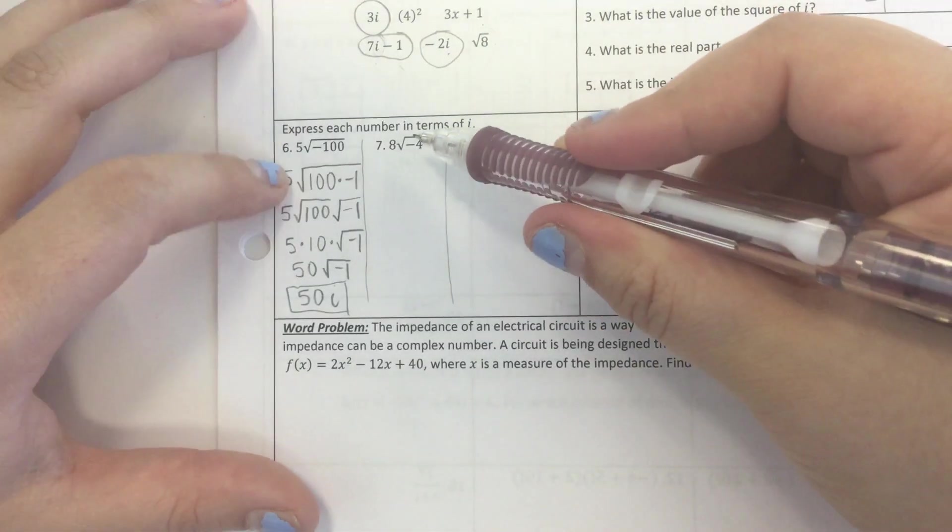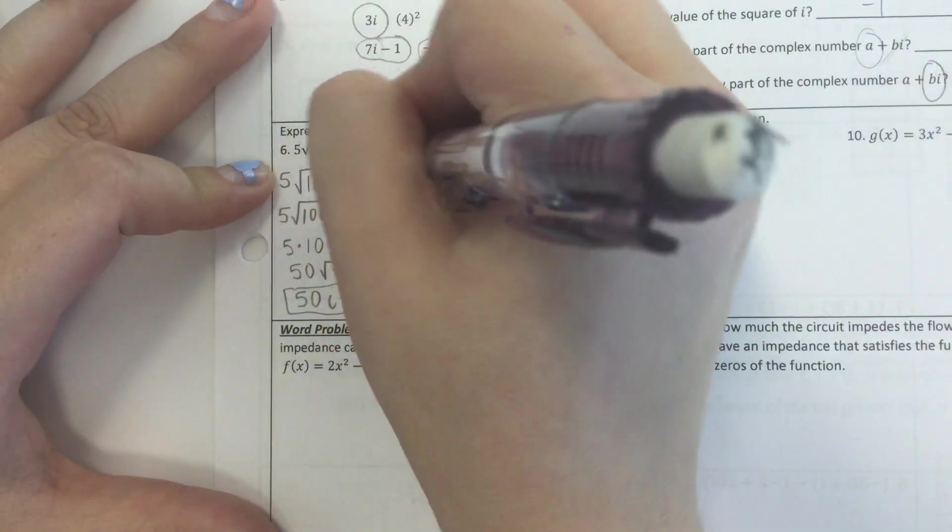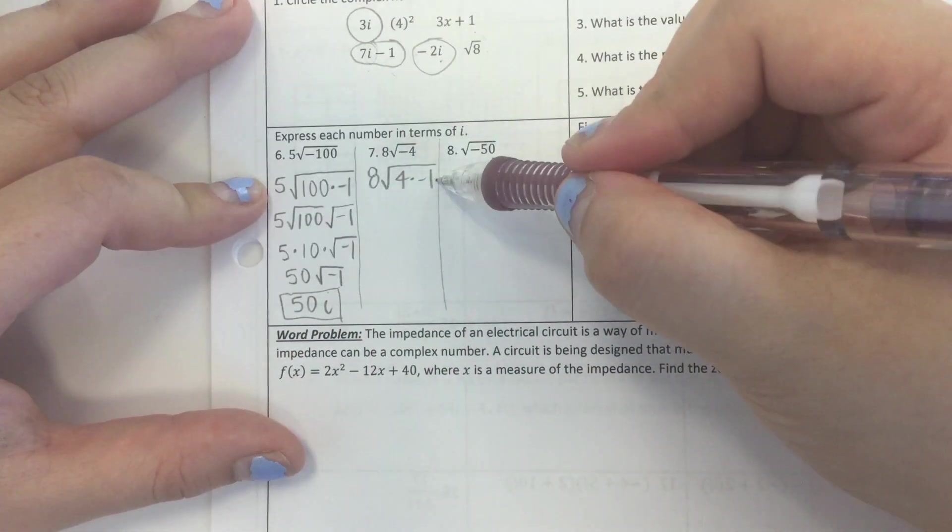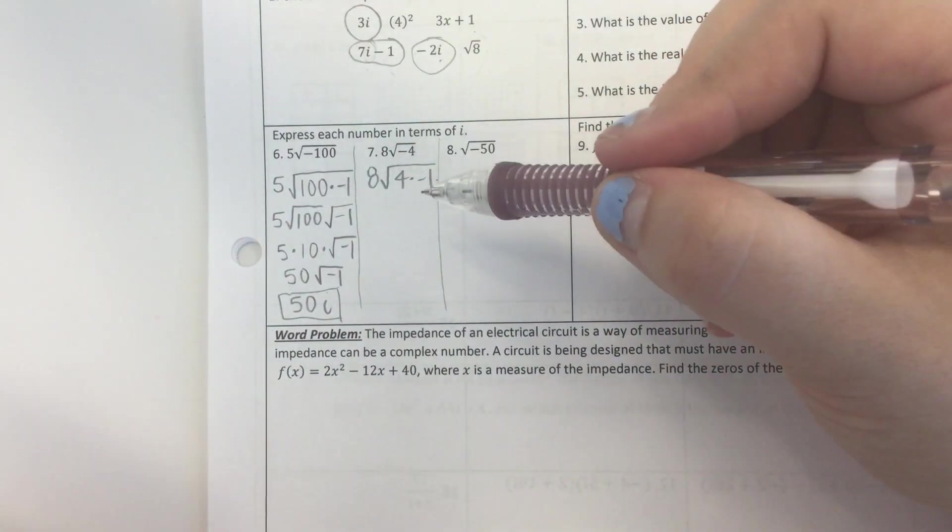Okay, let's do this next one. Let's just do the same thing we just did. So we have 8 times the square root of 4 times negative 1. Now all I did was divide this by negative 1 or factor out the negative 1.